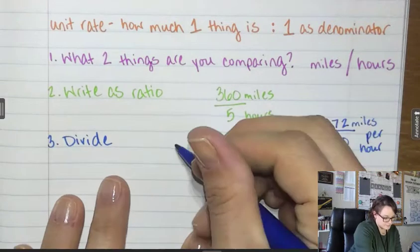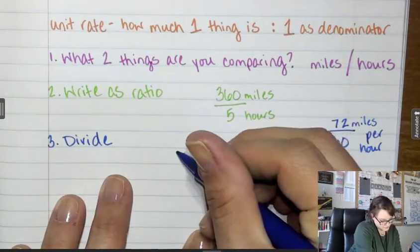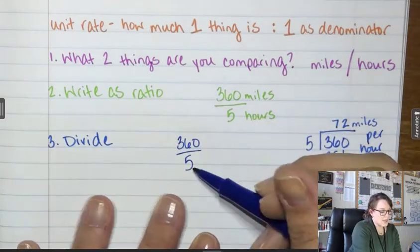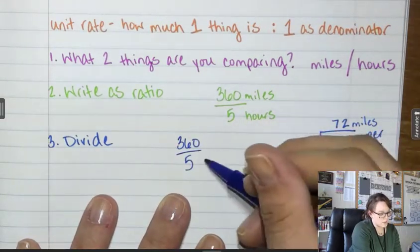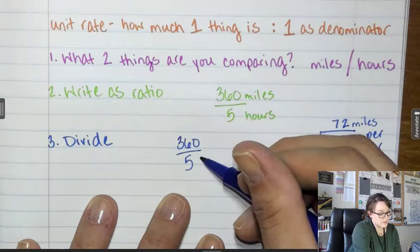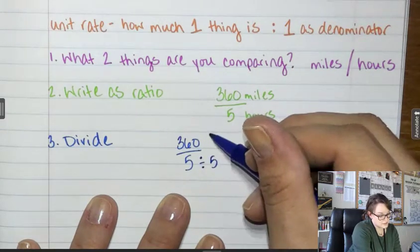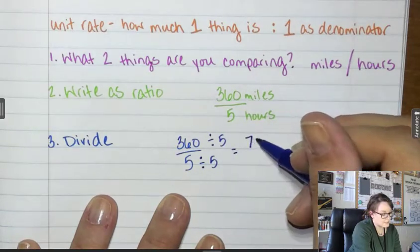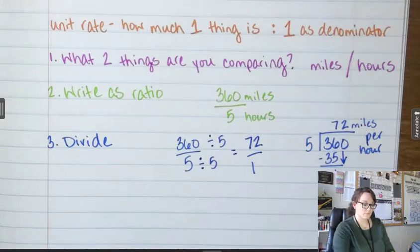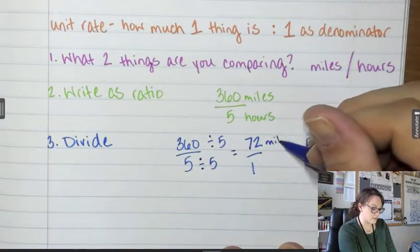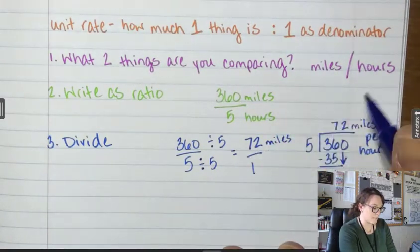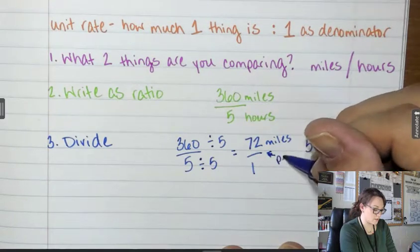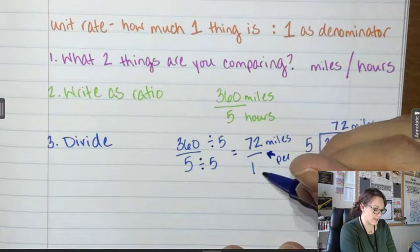There's another way to think about it. If you take your ratio 360 over 5, what can I do to the five to make it a one? Divide by five. So I can also simplify my fraction and it comes out the same, 72. And this is still miles. When we see that line, we think per. That line means per. And this is hours.